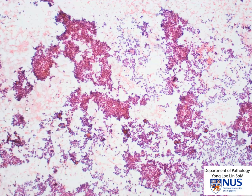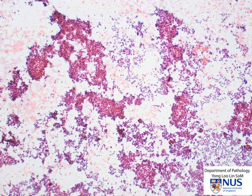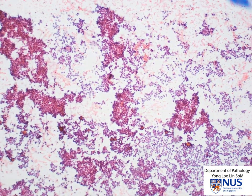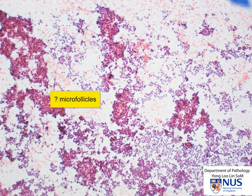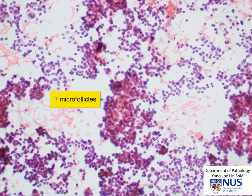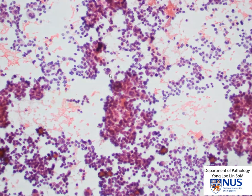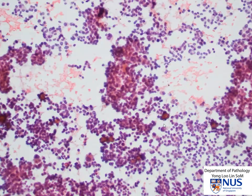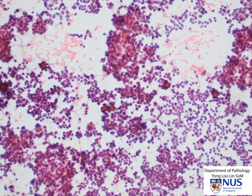In the corresponding alcohol-fixed Papanicolaou stain smear, again we see that it is very cellular. There is actually a suggestion of microfollicular formation in some areas, and again we can see binucleated cells. Most of the cells are quite polygonal and plump, or epithelioid.